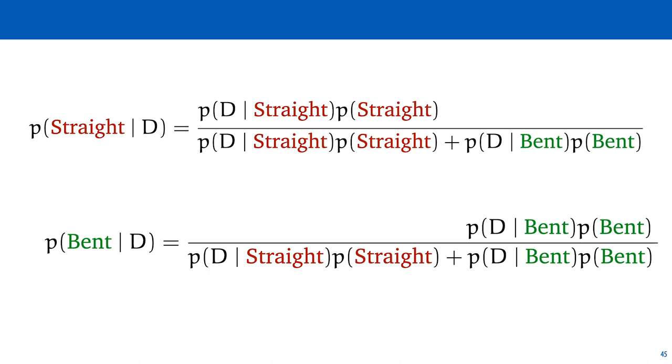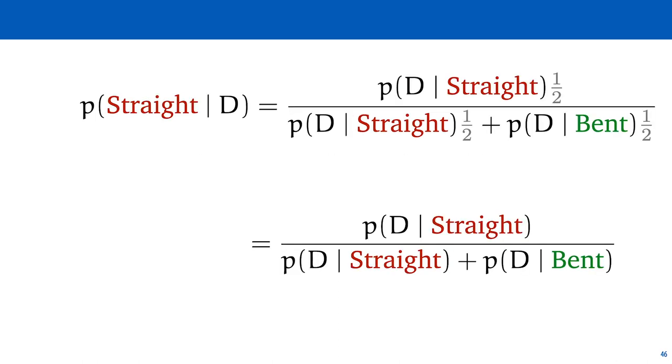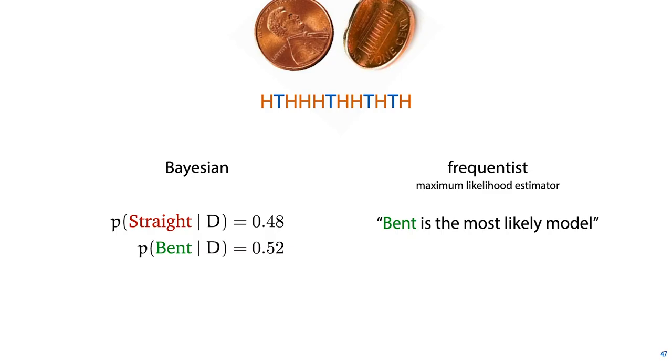In this case, since we've used a uniform prior, all priors in this expression are the same, and they cancel out against each other, leaving us with a simple proportion in terms of the data probabilities or likelihoods that we'd worked out in the previous slide. If you fill in these numbers, you'll see that the Bayesian solution to the problem is this distribution for the posterior.